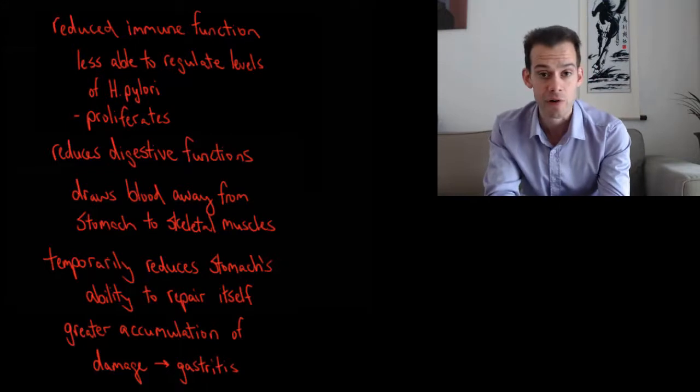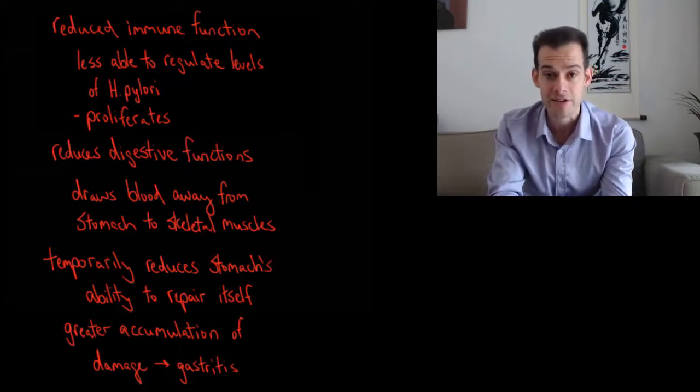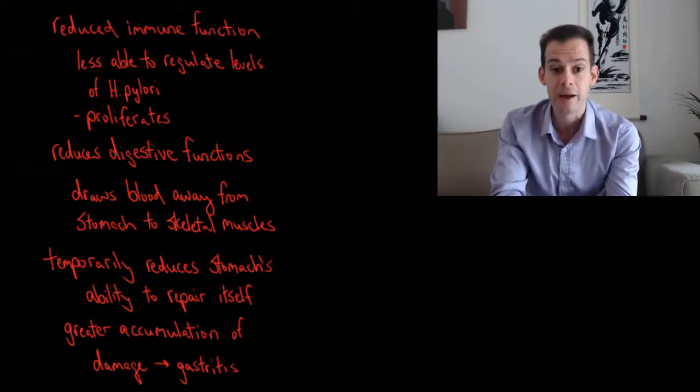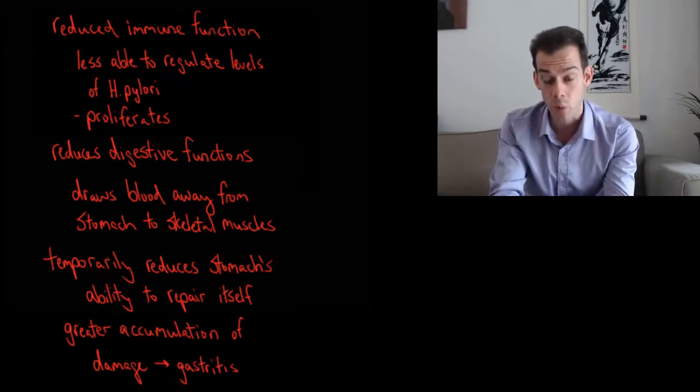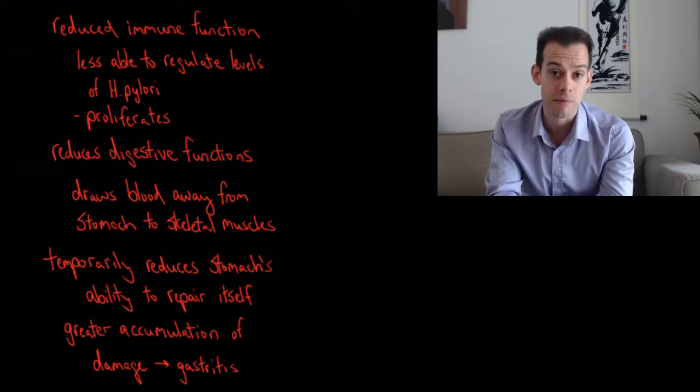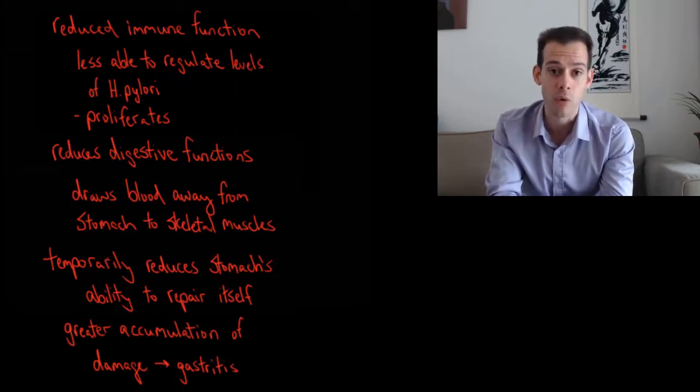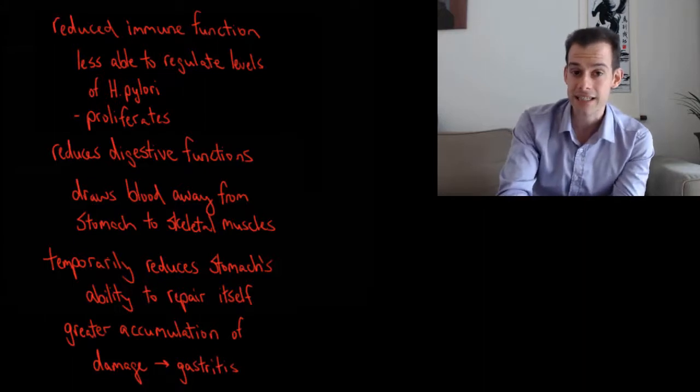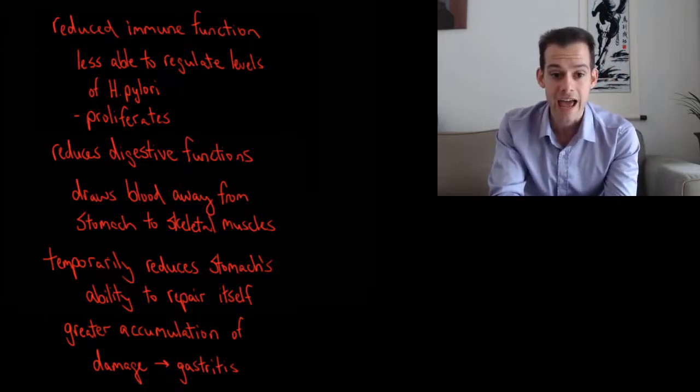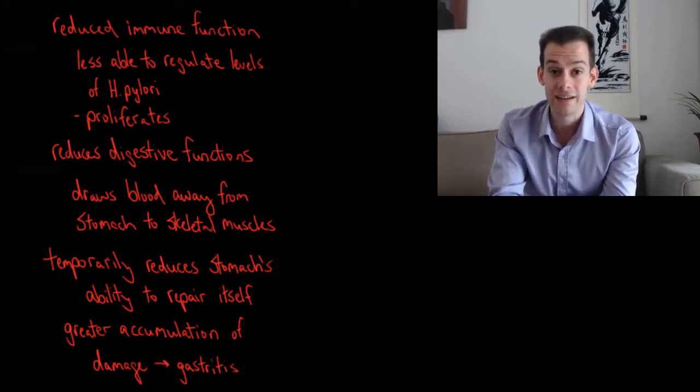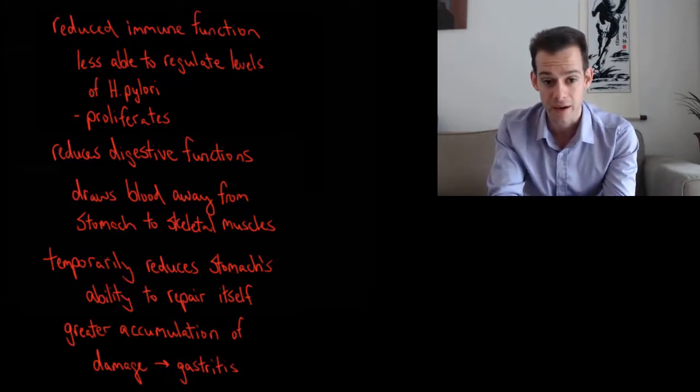This makes sense if you're about to fight or flee you want to have increased blood flow and oxygen and nutrients to your skeletal muscles and it's not so important to have it around your stomach but if you have this chronic stress and you're drawing blood away from the stomach quite often this reduces the stomach's ability to repair itself. And so now we have this combination of more helicobacter pylori in your stomach and less ability of the stomach to repair itself and this leads to more damage to the stomach lining which then results in gastritis the inflammation of the stomach lining.